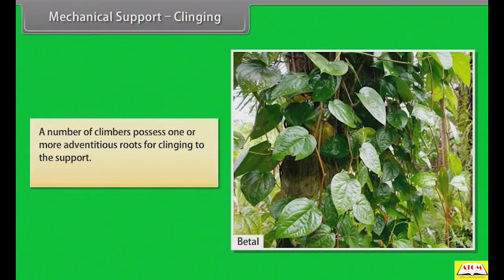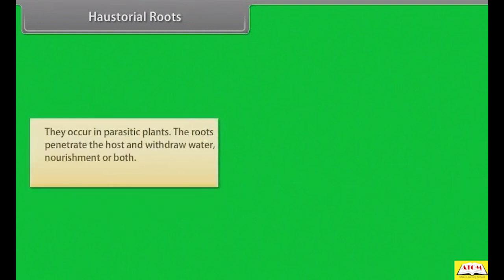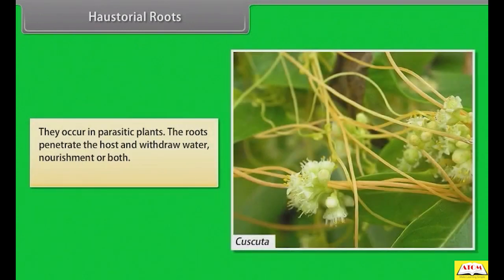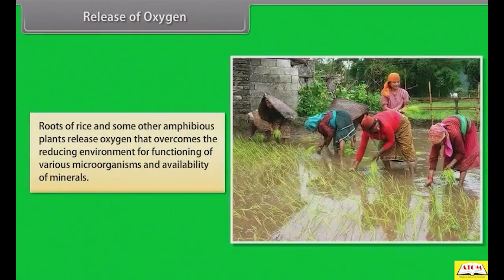A number of climbers possess adventitious roots for clinging to support. Examples: betel, Tecoma, ivy. Haustorial roots occur in parasitic plants; the roots penetrate the host and withdraw water, nourishment, or both. Examples: Cuscuta, Viscum. Roots of rice and some other amphibious plants release oxygen that overcomes the reducing environment for functioning of microorganisms and availability of minerals.